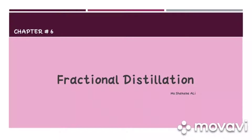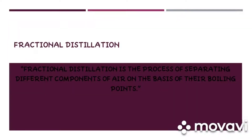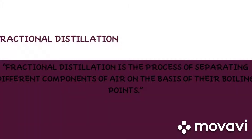Fractional distillation is a filtration technique in which we filter out the components of air, which means all the gases which make up the air, for example, nitrogen and oxygen. We filter out these gases or components on the basis of their boiling points. Fractional distillation is the process of separating different components of air on the basis of their boiling points.